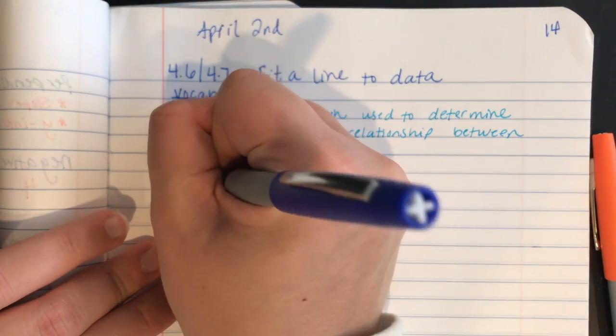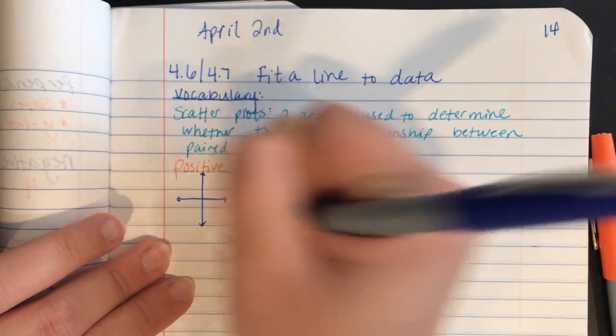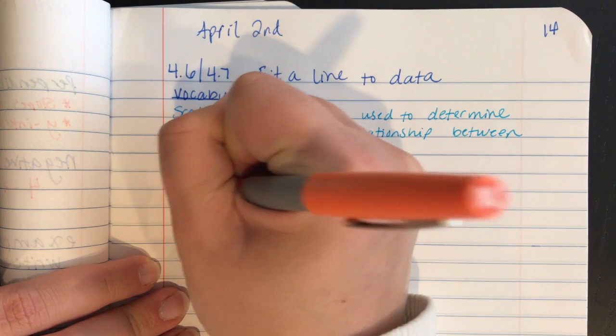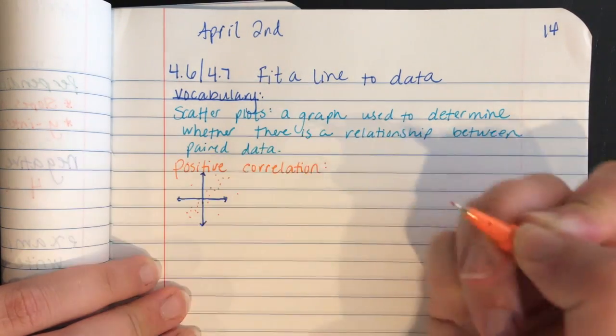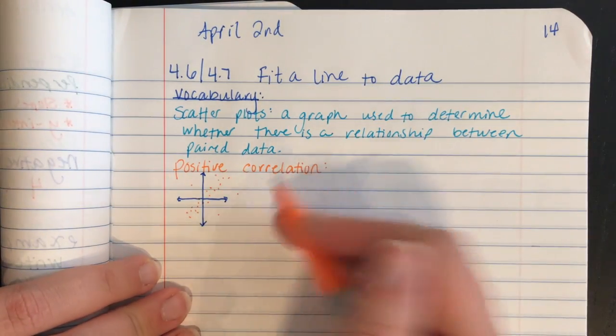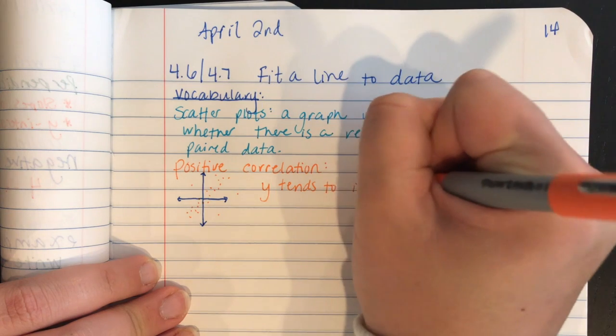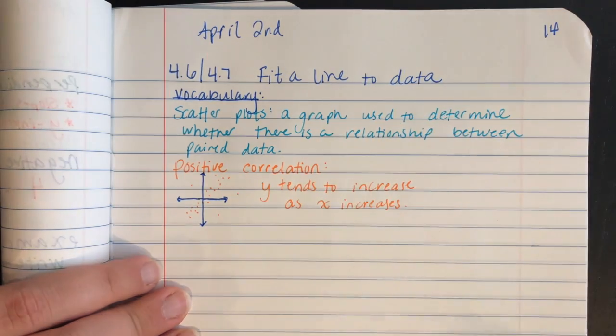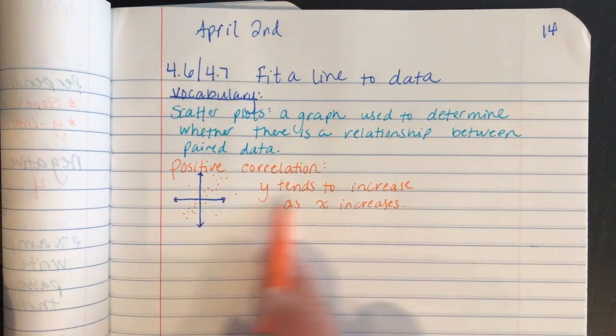So if I had a graph, a positive correlation is going to be where, as you can probably guess, I have a positive slope or it appears that as my y increases, or as x increases, y also increases. So I might have some outliers out to the side, but for the most part it follows a trend that's positive. So when you're looking, let's say you don't have a graph, one thing you want to look at on a table is y tends to increase as x increases.